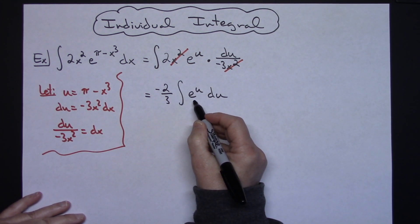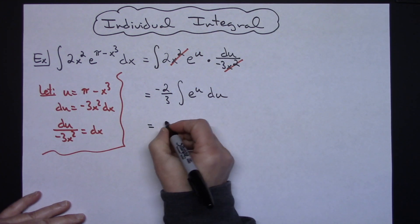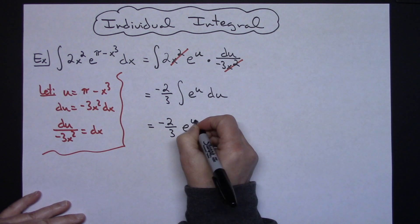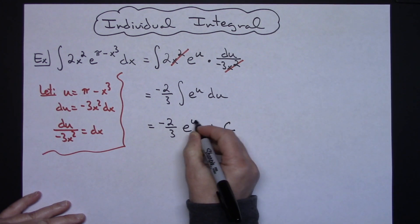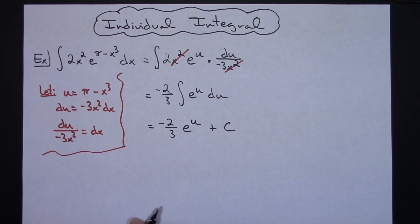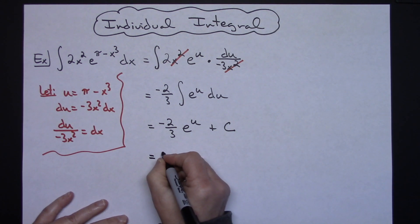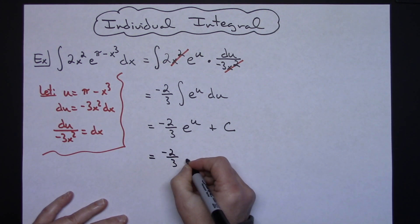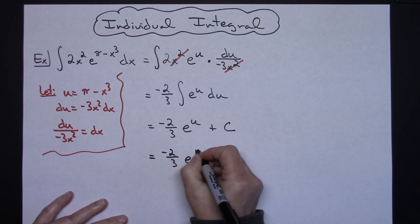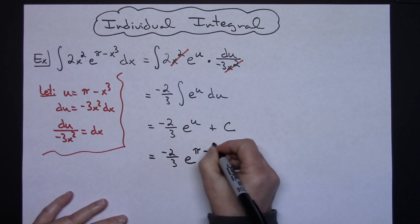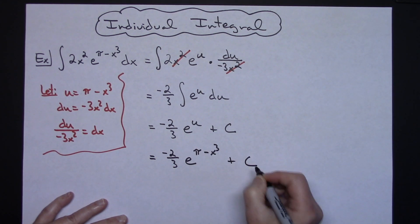Integrating e to the u is just an e to the u so that integrates very easily. So I'll have a negative 2 thirds e to the u plus c. Replacing u with what we said it's going to be, I will have a negative 2 thirds e raised to the pi minus x to the third and then plus c.